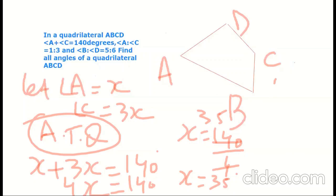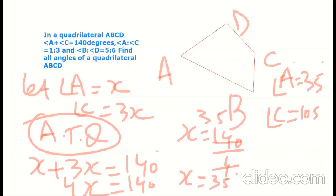So angle A will be equal to 35 degrees. Since angle C is 3X, angle C will be equal to 105 degrees — that is 35 multiplied by 3.